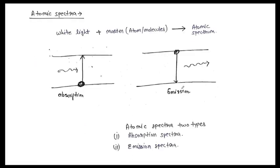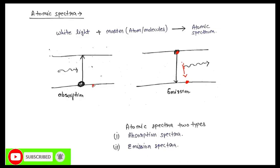So what is atomic spectra? The atom has various energy levels. If the atom makes a transition from a higher excited state to a lower excited state, it loses energy. Or it can transition from a lower energy level to a higher energy level. In this process, the atom produces radiation, and the collection of this radiation is described by the atomic spectra.